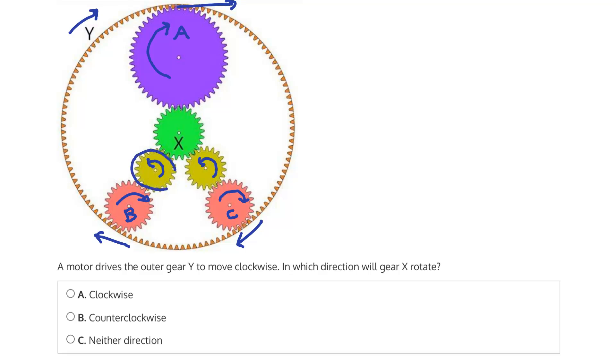Now, from these two gears, the yellow gears meshed with B and C, they're already rotating counterclockwise. So we would expect X to rotate clockwise.